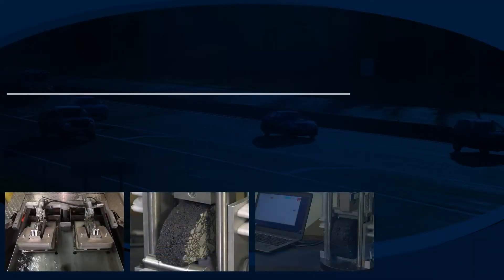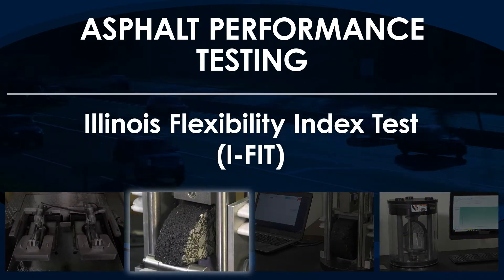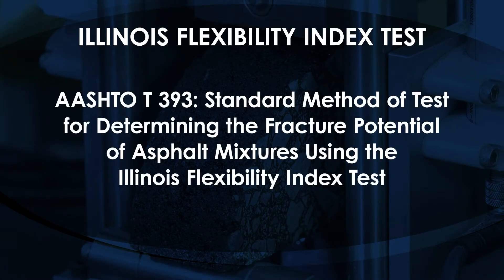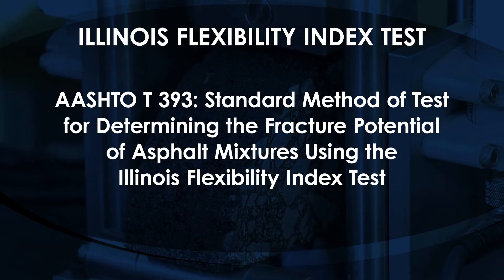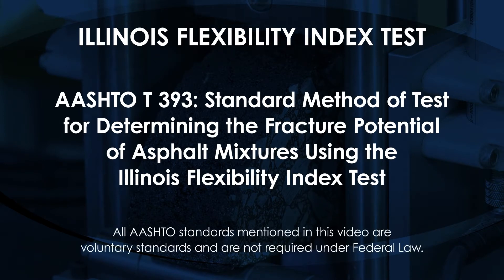This video is part of a series on asphalt performance testing and demonstrates the Illinois Flexibility Index Test, or IFIT, based on AASHTO T-393 standard method of test for determining the fracture potential of asphalt mixtures using the Illinois Flexibility Index Test. All AASHTO standards mentioned in this video are voluntary standards and are not required under federal law.